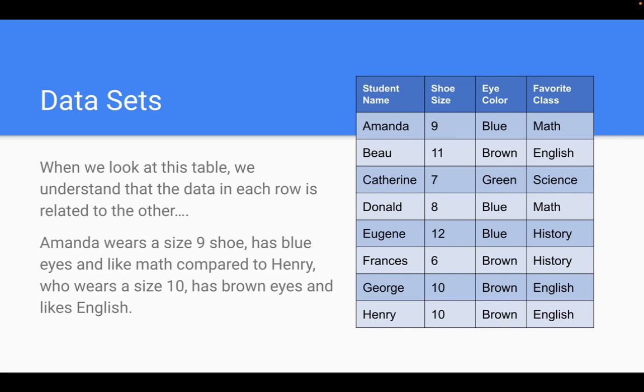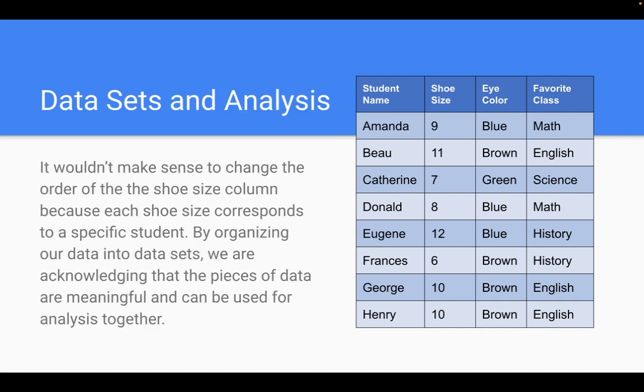So when we look at this table, we understand that the data in each row is related to each other. So we know that the stuff in this row relates to Amanda, this one to Beau, this one to Catherine. So we know Amanda wears a size 9 shoe, has blue eyes, and likes math compared to Henry, who wears a size 10 shoe, has blue eyes, and likes English. So it wouldn't make sense to change the order of the shoe size column because the shoe size column corresponds with a specific student. By organizing our data into data sets, we're acknowledging that the pieces of data are meaningful and can be used for analysis together.